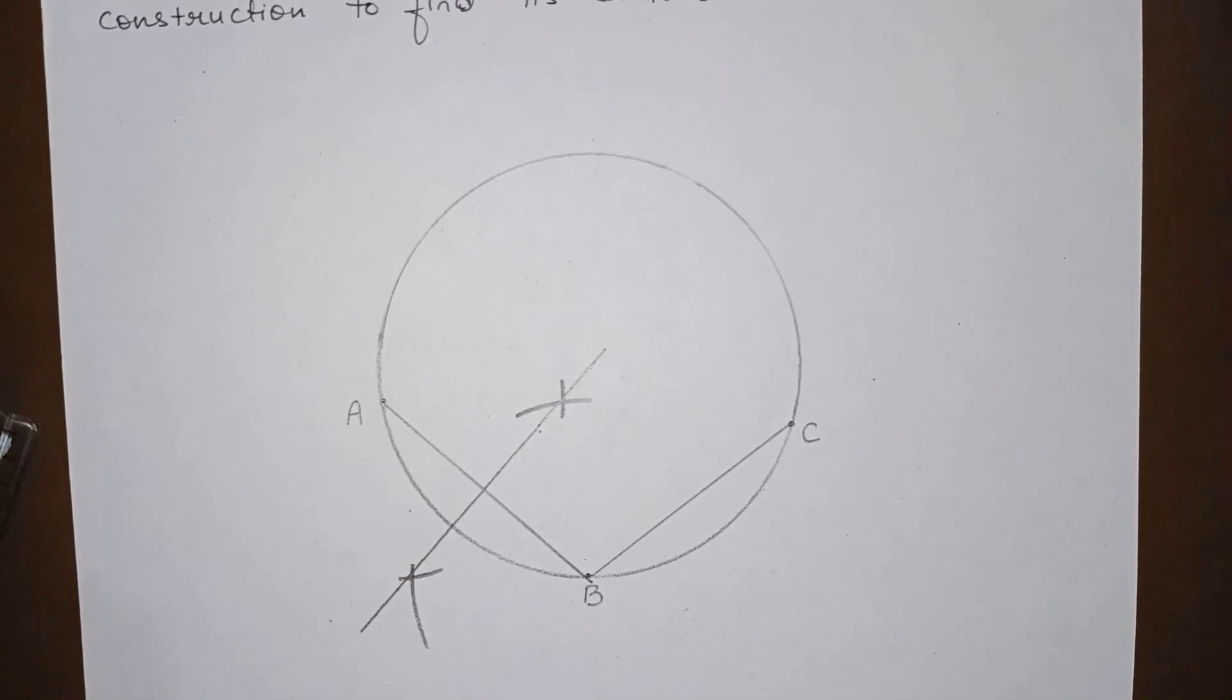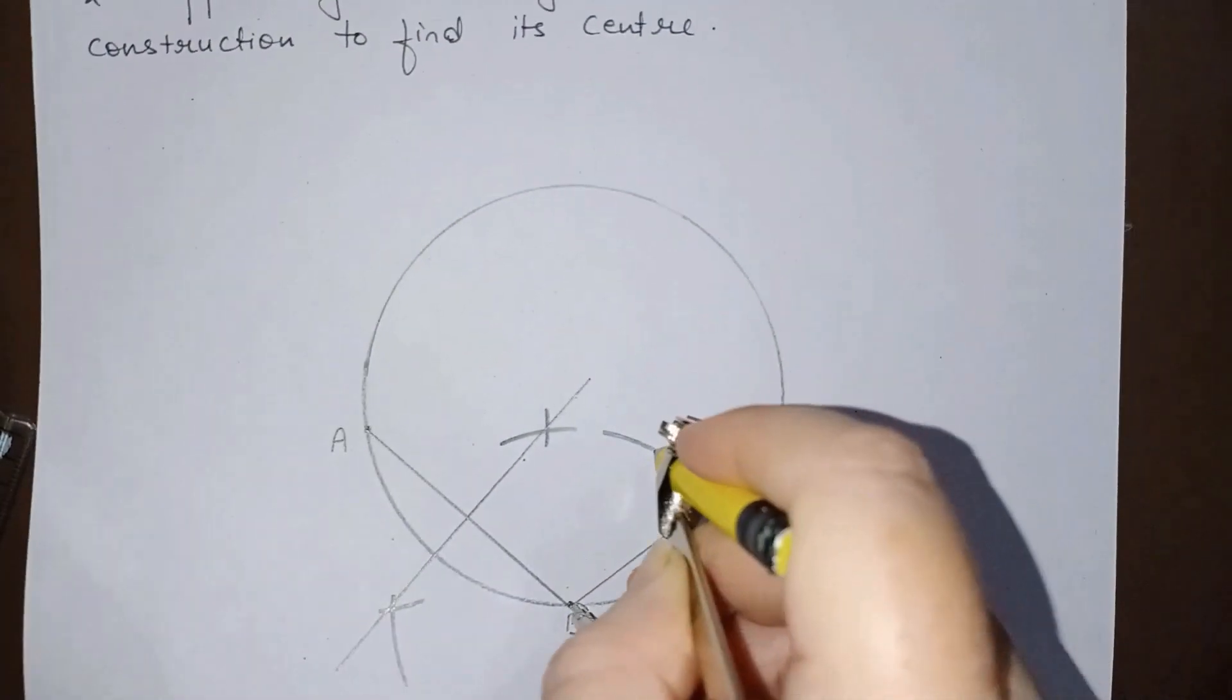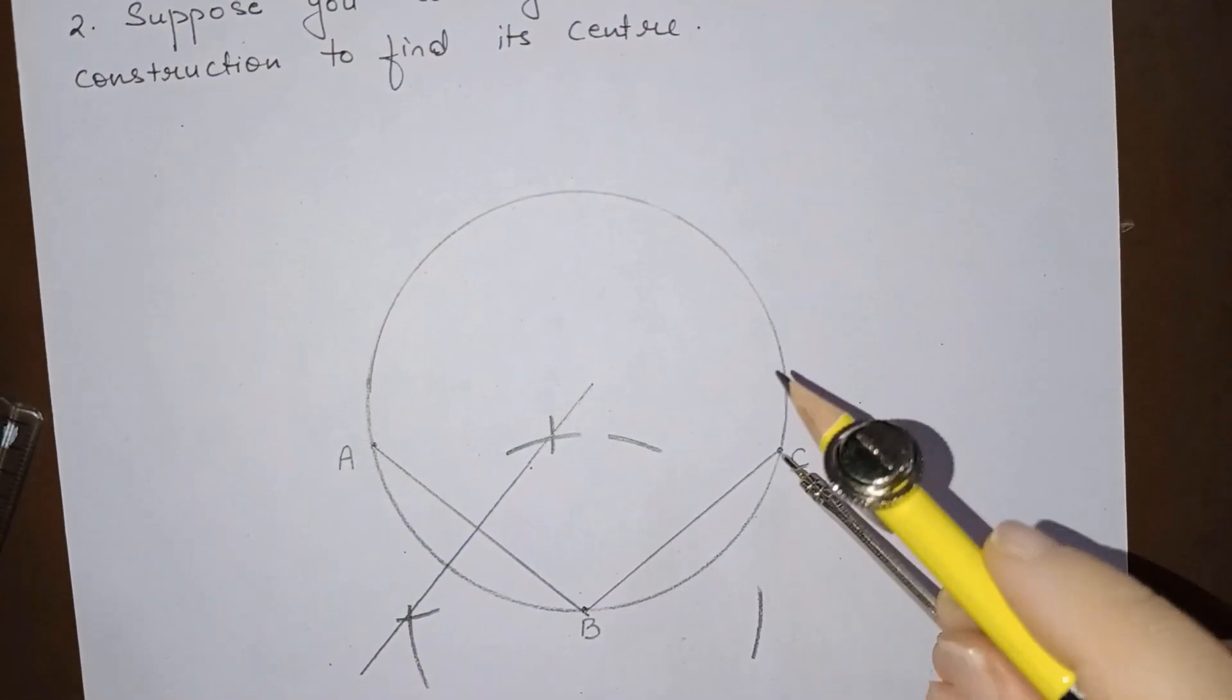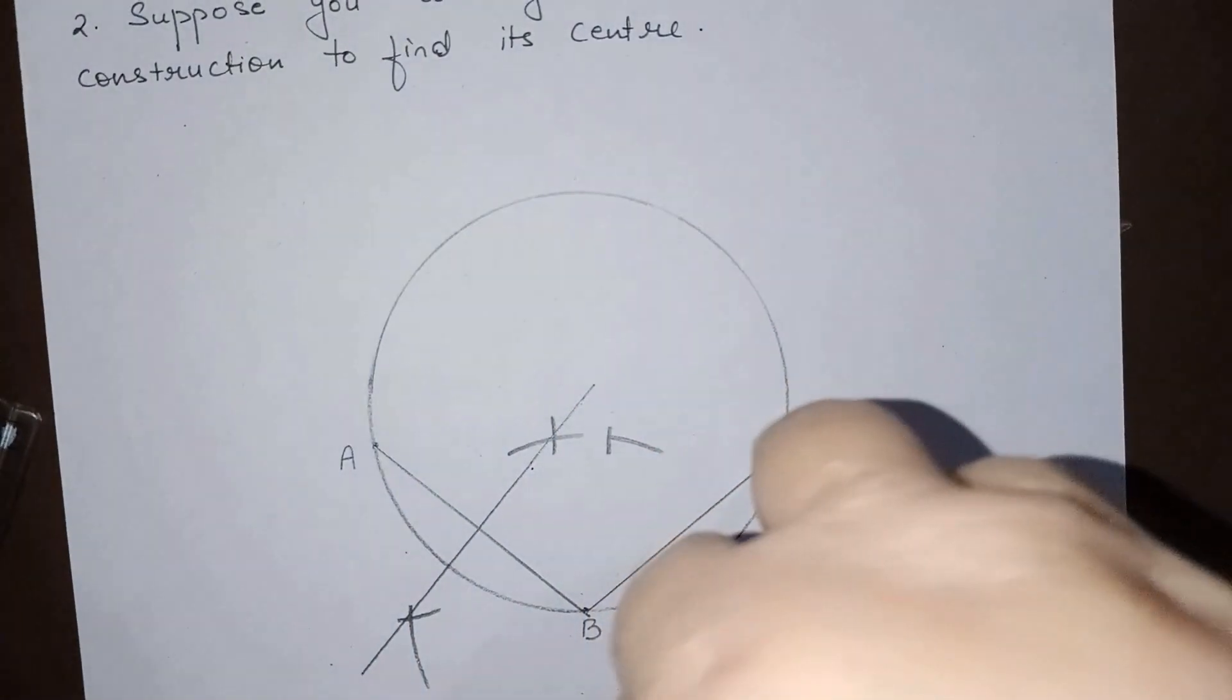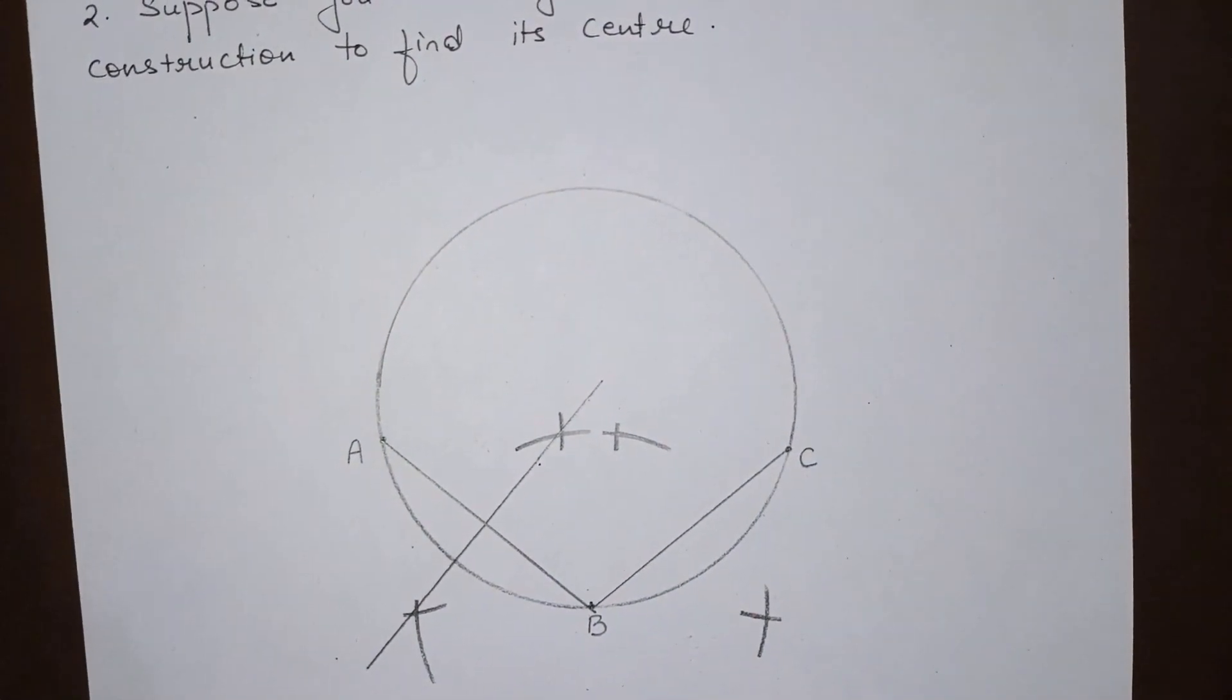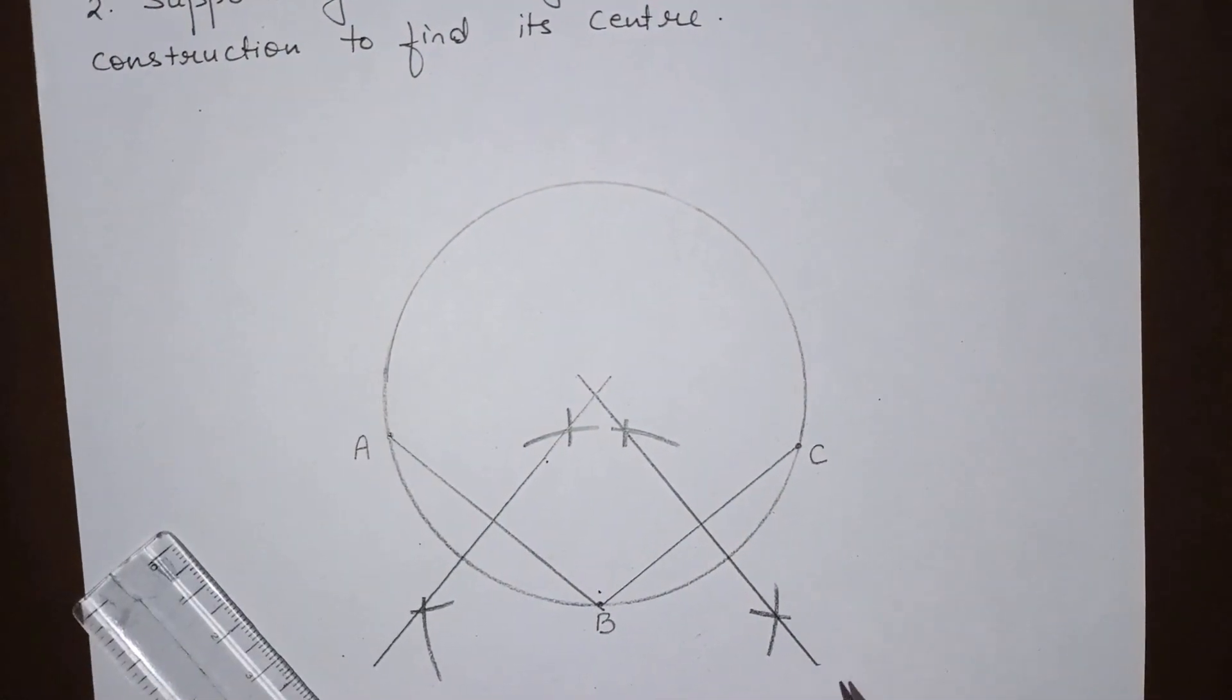Similarly, let us draw perpendicular bisector of BC. Here like this and like this. This is the perpendicular bisector of BC.